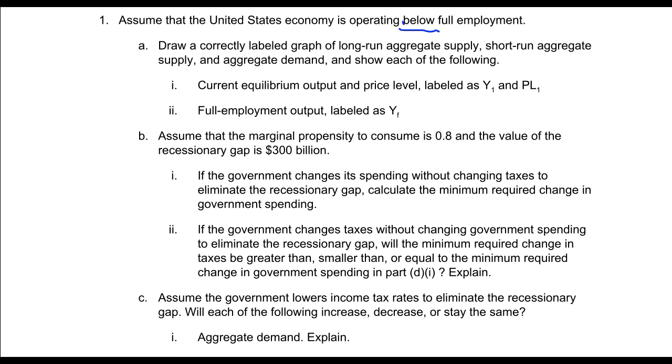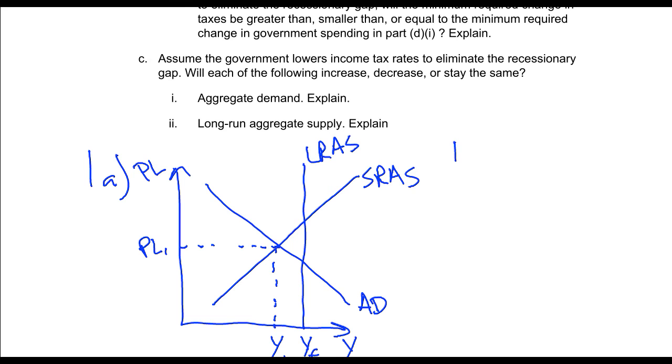Assume that the marginal propensity to consume is 0.8 and the value of the recessionary gap is $300 billion. If the government changes its spending without changing taxes to eliminate the gap, calculate the minimum required change in government spending. So I've got a $300 billion gap that I've got to close, and I've got to increase my spending by a certain amount.